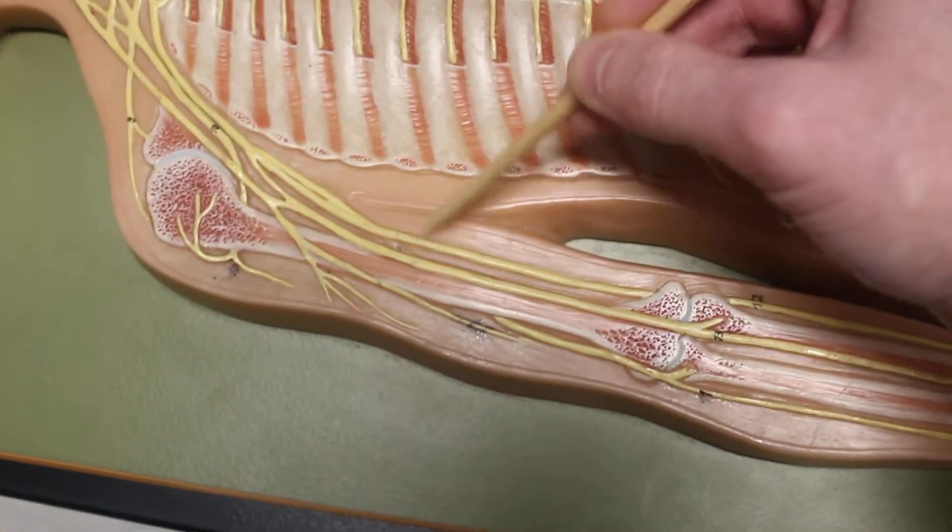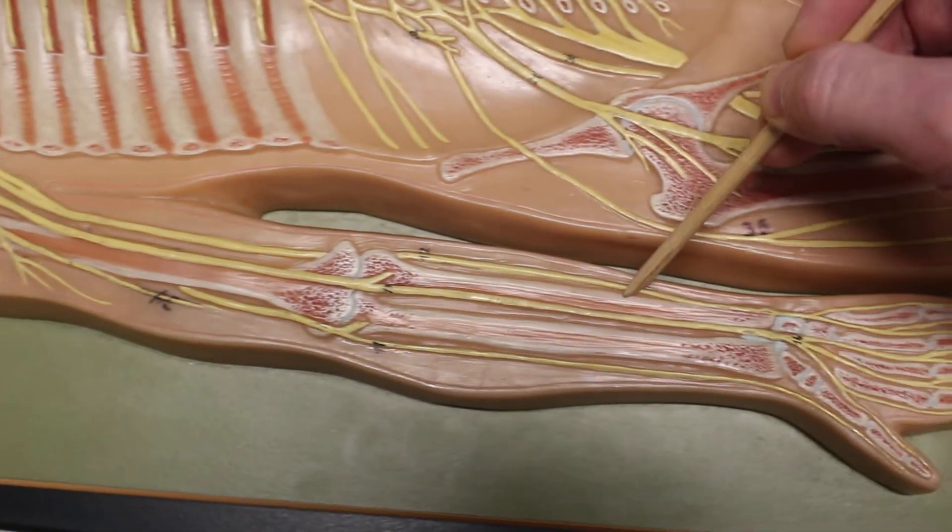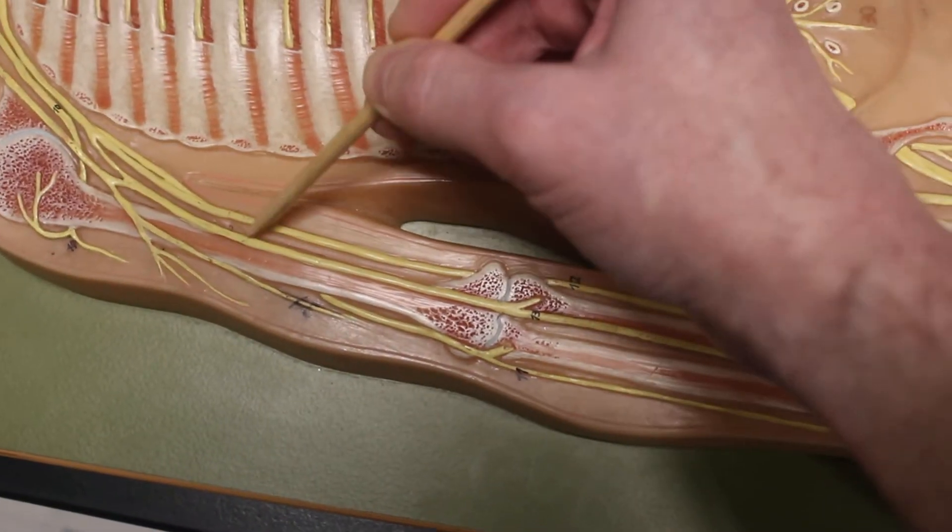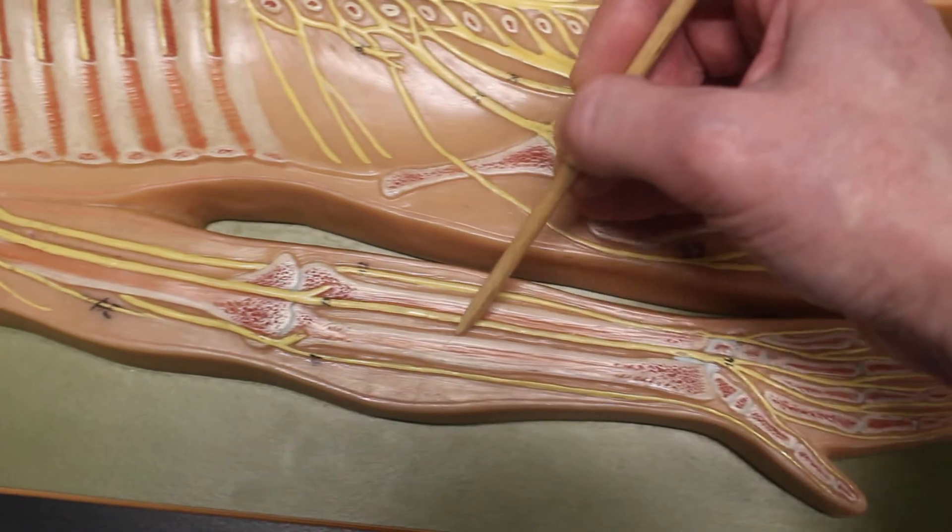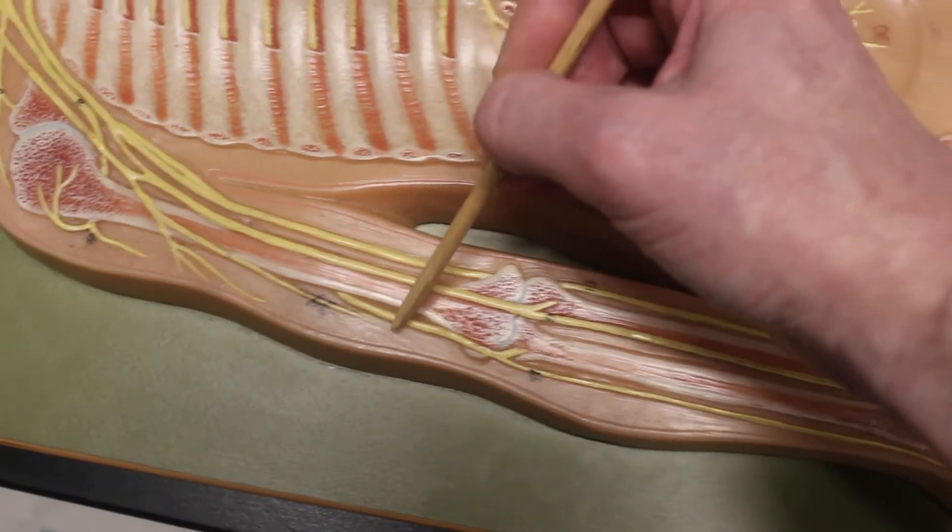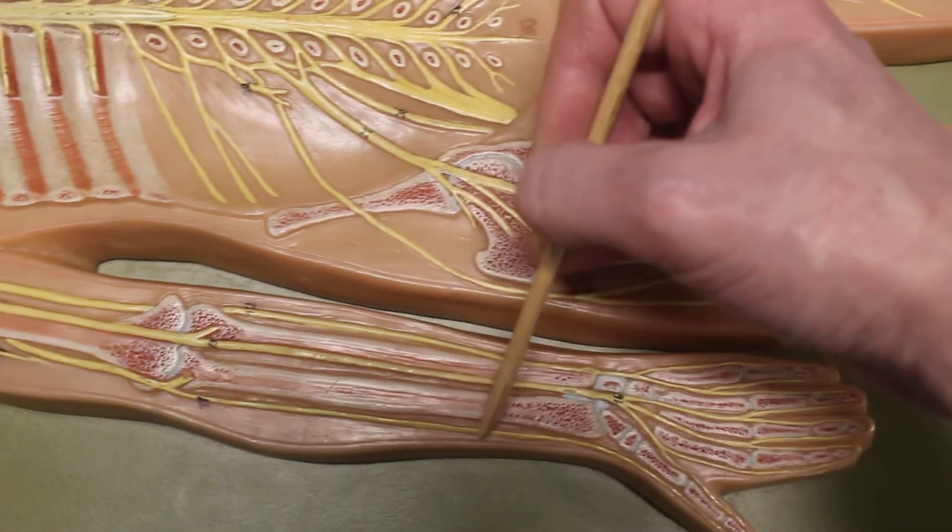Then the nerves branch down, and we have the ulnar nerve, same side as the ulna. Median nerve, running down the middle. And the radial nerve, on the same side as the radius.